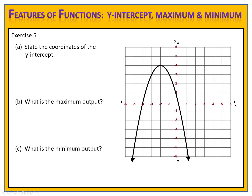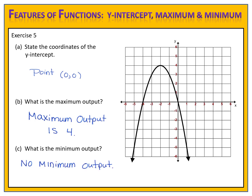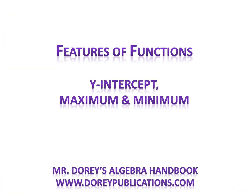The last exercise is for you to try. Let's see how good you are at identifying the coordinates of the y-intercept, the maximum, and the minimum of the function. Please pause the video here and come back when you're ready to compare answers. Let's compare answers. The first question asks us about the y-intercept. The second question asks us about the maximum — how high does the function go? The maximum height is 4, so the maximum output is 4. The third question asks us about the minimum output. We have arrows on the ends going downward forever toward negative infinity, so there is no minimum output.